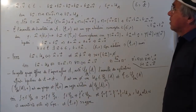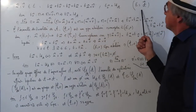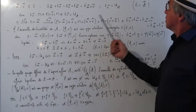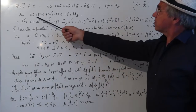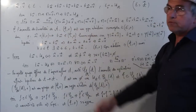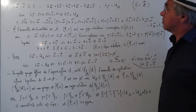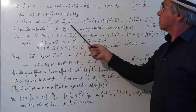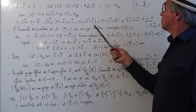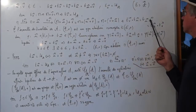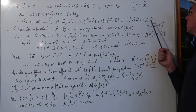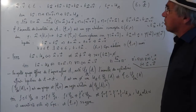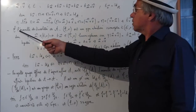Propriété : si U et V sont deux vecteurs de la direction de l'espace affine, T_U ∘ T_V = T_V ∘ T_U = la translation de vecteur U+V. Et la translation de vecteur nul est l'identité de l'espace affine. En effet, la translation de vecteur nul envoie M sur M plus vecteur nul, donc c'est l'identité. Si j'applique d'abord T_U puis T_V au point M, j'obtiens la translation de vecteur U+V, ou de vecteur V+U, c'est pareil. Donc les translations sont commutatives.